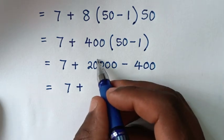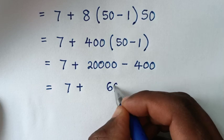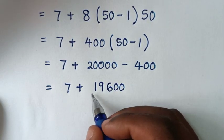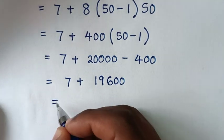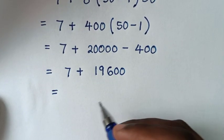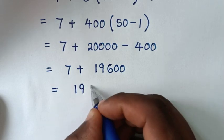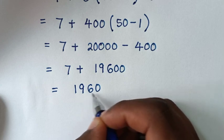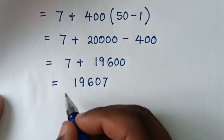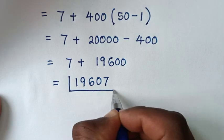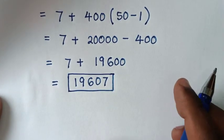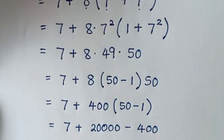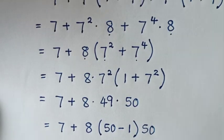Then it will be equal to 7 plus 20,000 minus 400. Here we borrow — 20,000 minus 400 is 19,600. Then 7 plus 19,600 is 19,607, and that is our final answer. Thank you, don't forget to subscribe to my channel and see you in the next video, bye bye.